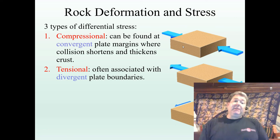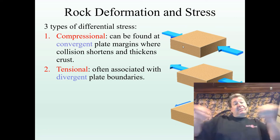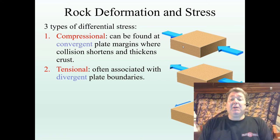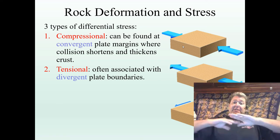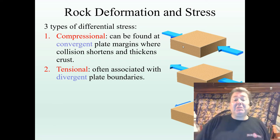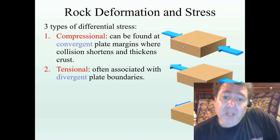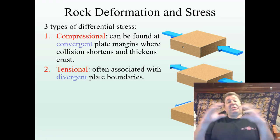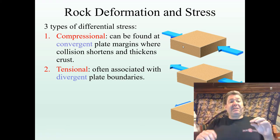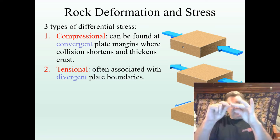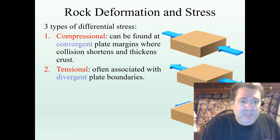The second type of stress is tensional — tension, like putting tension on a rope, pulling. This is associated with divergent boundaries, where the unequal direction of stress is a pulling apart. Here the space issue is that we have too much space. Think about taking a piece of taffy or Play-Doh and stretching it out — that's tensional. In order to accommodate the extra space, things are going to lengthen and thin.